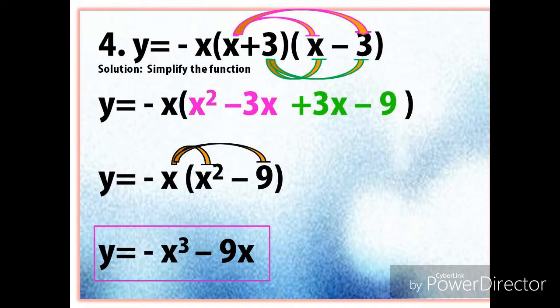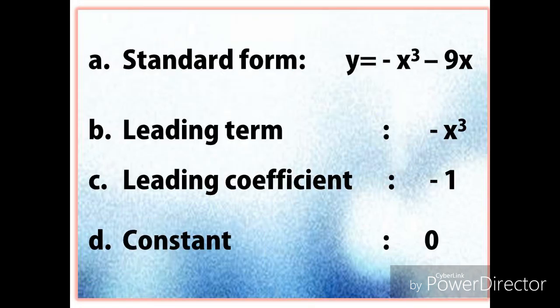Example number four is Y equals negative X times (X plus 3) times (X minus 3), also in factored form. We simplify: negative X times (X squared minus 3X plus 3X minus 9). Combining like terms, negative 3X plus 3X equals 0, leaving X squared minus 9. Multiplying by negative X gives Y equals negative X cubed plus 9X. The leading term is negative X cubed, the leading coefficient is negative 1, and the constant is 0.